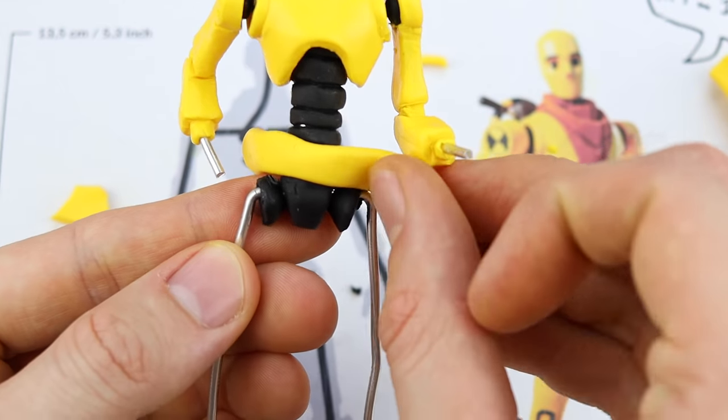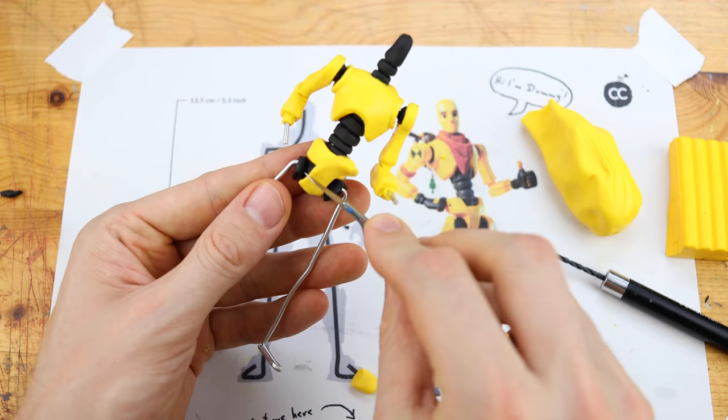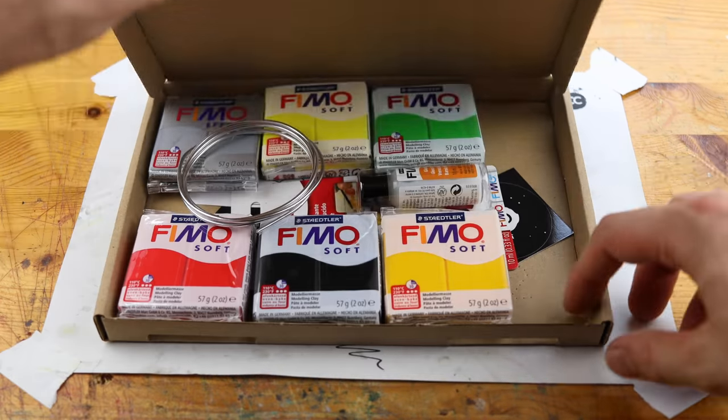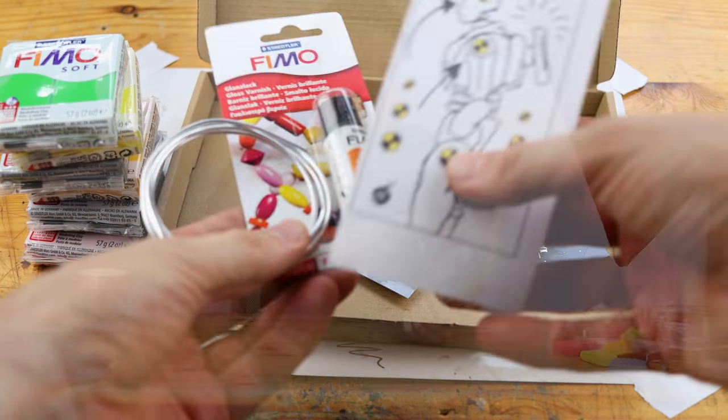Before this video was even out I got some requests for this, the dummy set. It's the perfect beginner creation. You get all the materials: the transparent polish, the clay, the wire, the stickers. That's it.